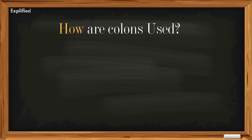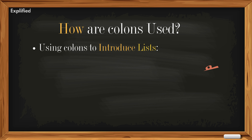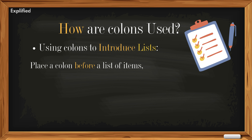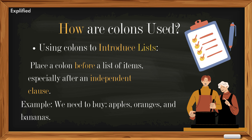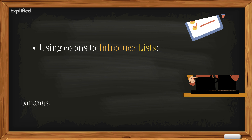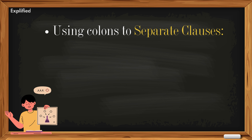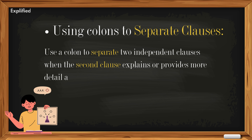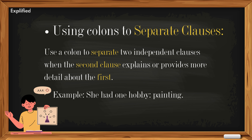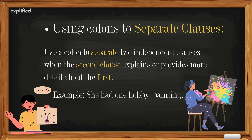How are colons used? Using colons to introduce lists: place a colon before a list of items, especially after an independent clause. Example: We need to buy apples, oranges, and bananas. Using colons to separate clauses: use a colon to separate two independent clauses when the second explains or provides more detail about the first. Example: She had one hobby: painting.